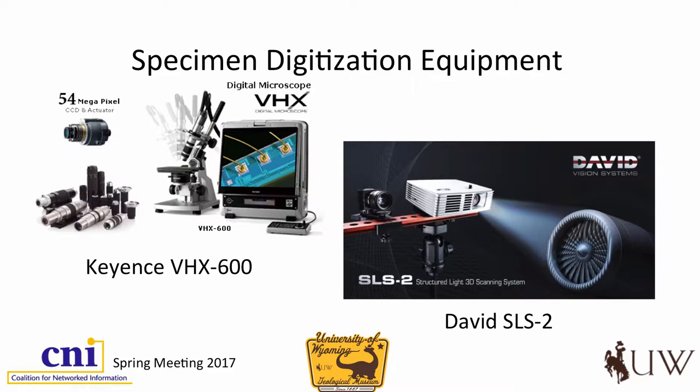Digitization equipment. I'm going to focus mostly on the David SLS-2 scanner. This is the scanner that we use for medium-sized fossils. To give you an idea, this is a small skull, about an inch or two across. We've done things about this small, and we've done bison skulls that are two to three feet across. We use the Keyence digital microscope for these small teeth. The David SLS-2 — how many of you are familiar with scanners?